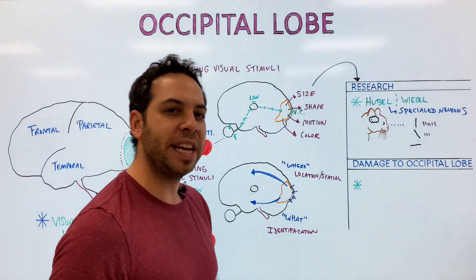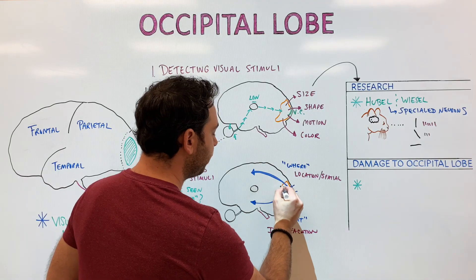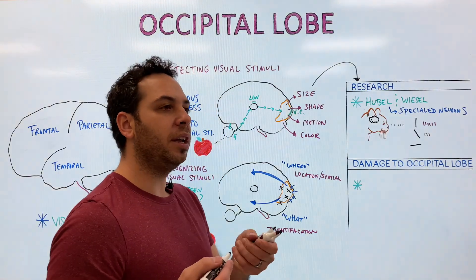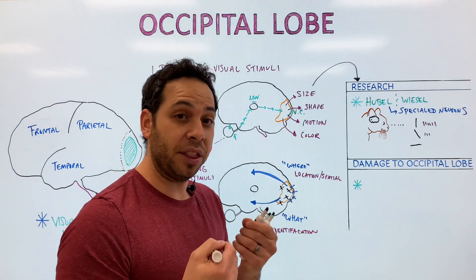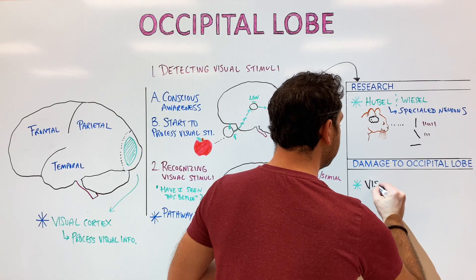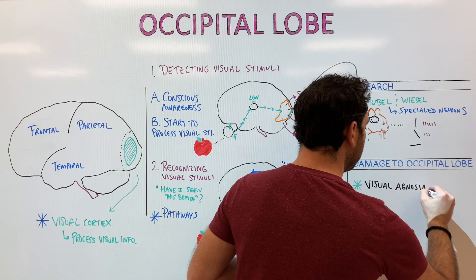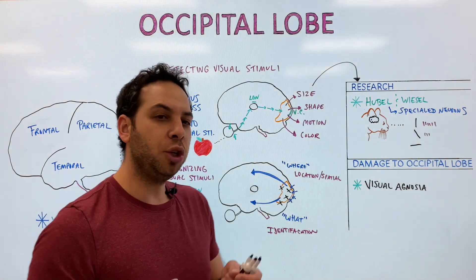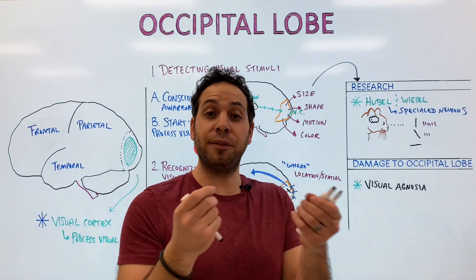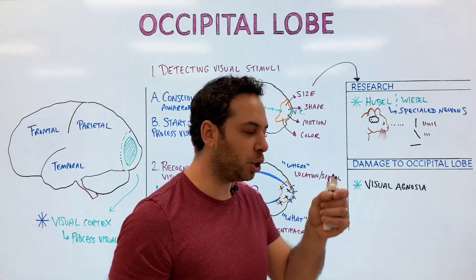Now, here's a question: what if there's damage to the brain? What if there's some sort of lesion because of a stroke or traumatic brain injury — what could possibly happen? The primary issue is we can see the object, but we don't really recognize the object. And what this is called, if there's damage, is visual agnosia. Essentially, you can see an object at a sensory level — light waves enter your eye, the light converts to electricity — you can process the information, but your brain can't identify it. This is visual agnosia.